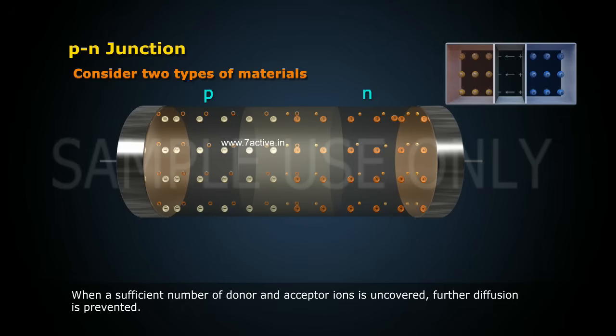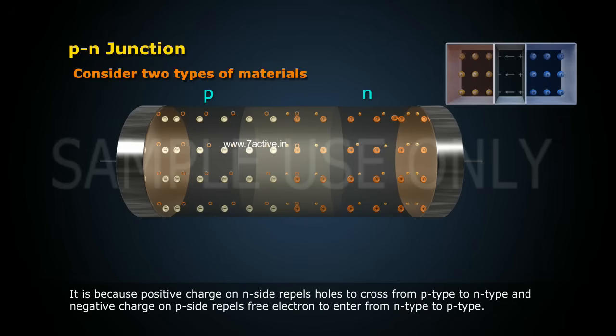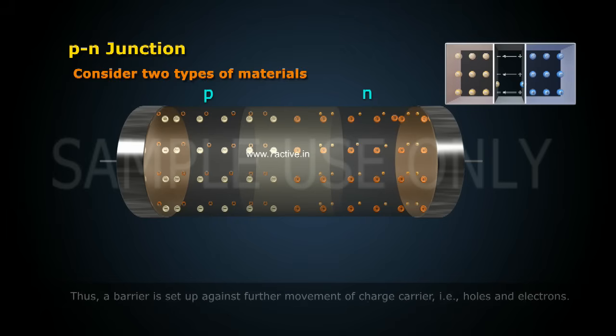further diffusion is prevented because the positive charge on the N-side repels holes from crossing from P-type to N-type, and the negative charge on the P-side repels free electrons from entering from N-type to P-type.